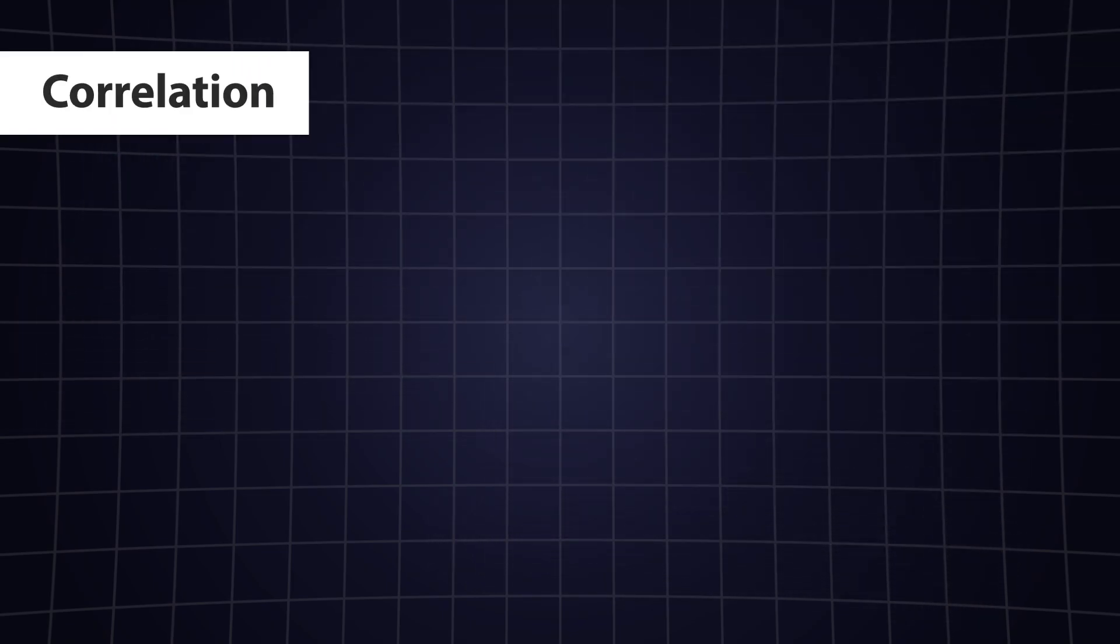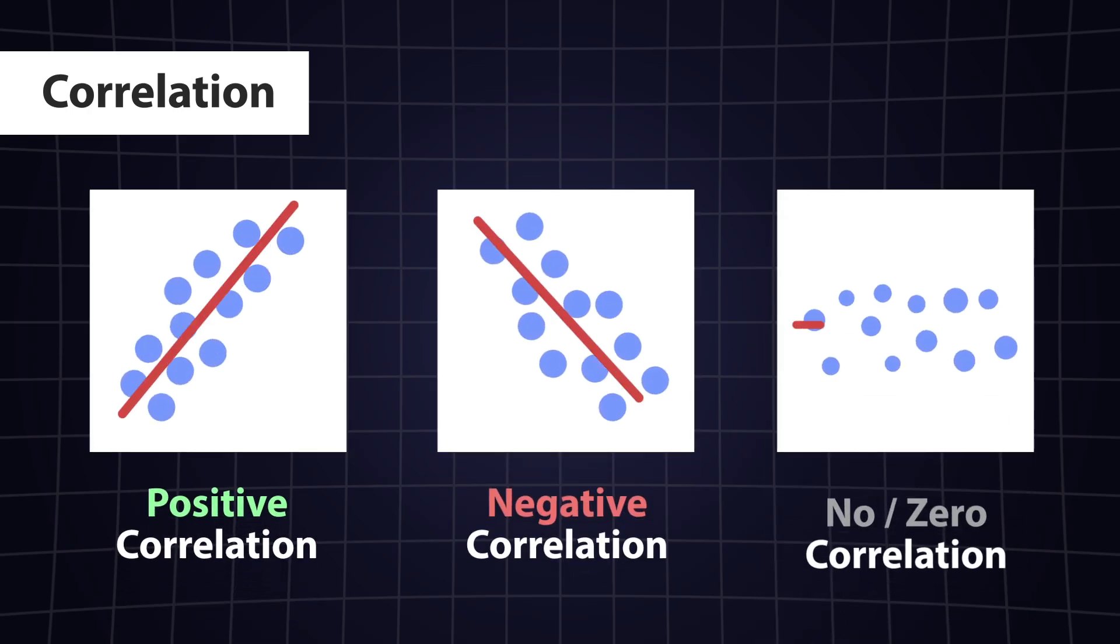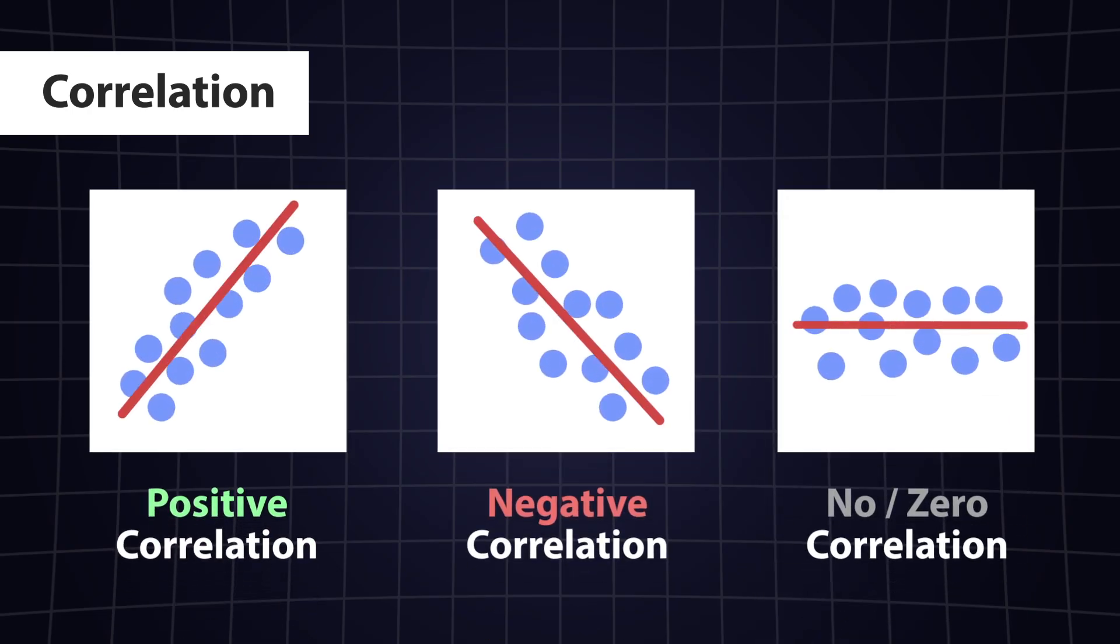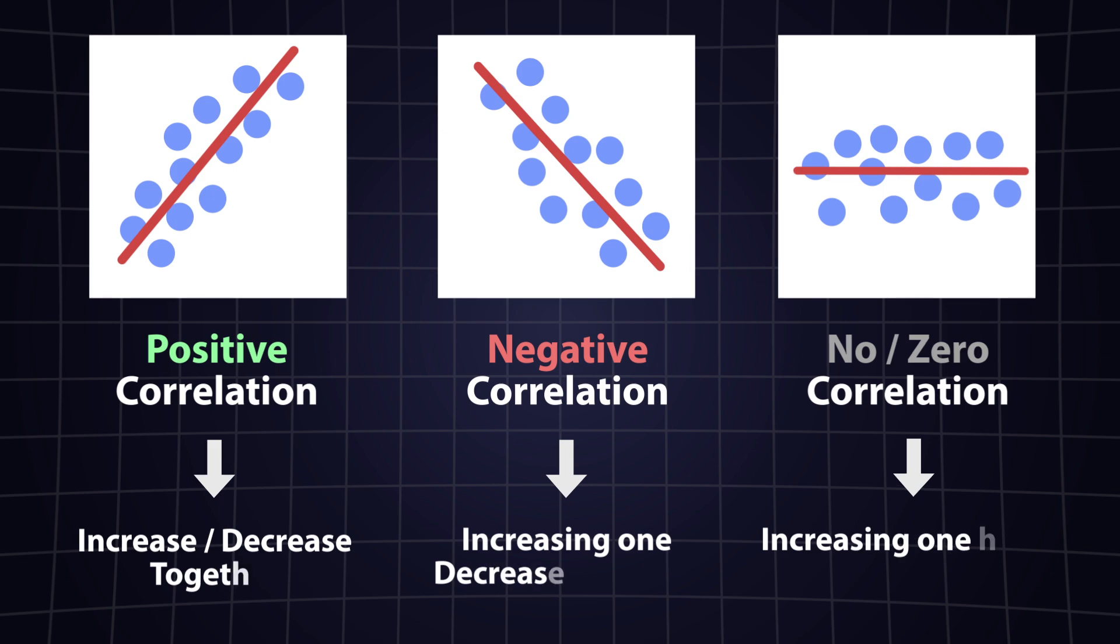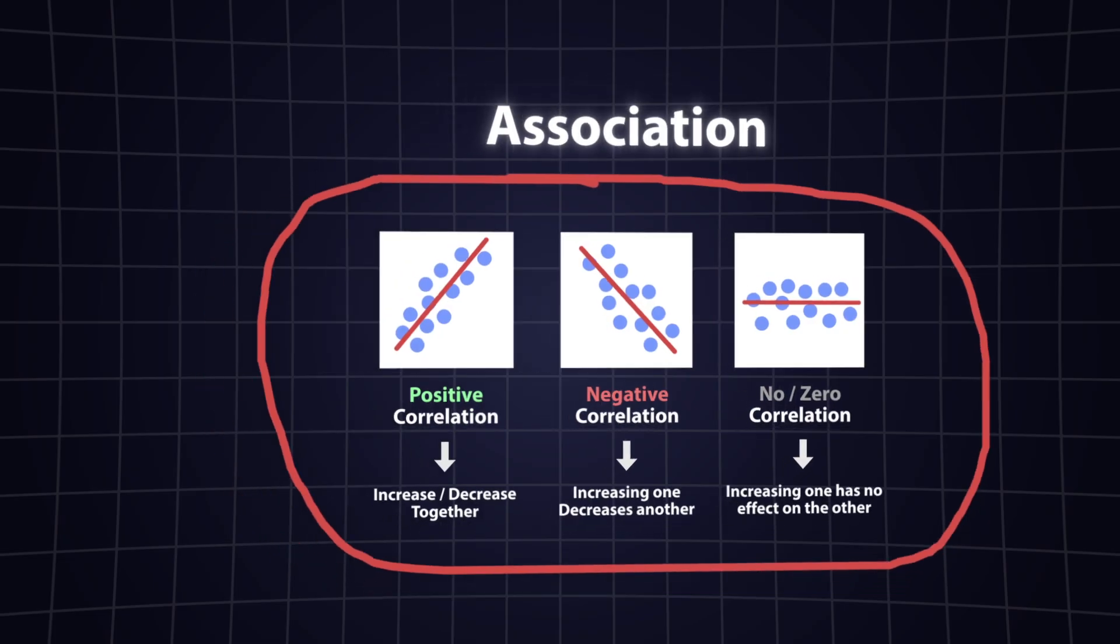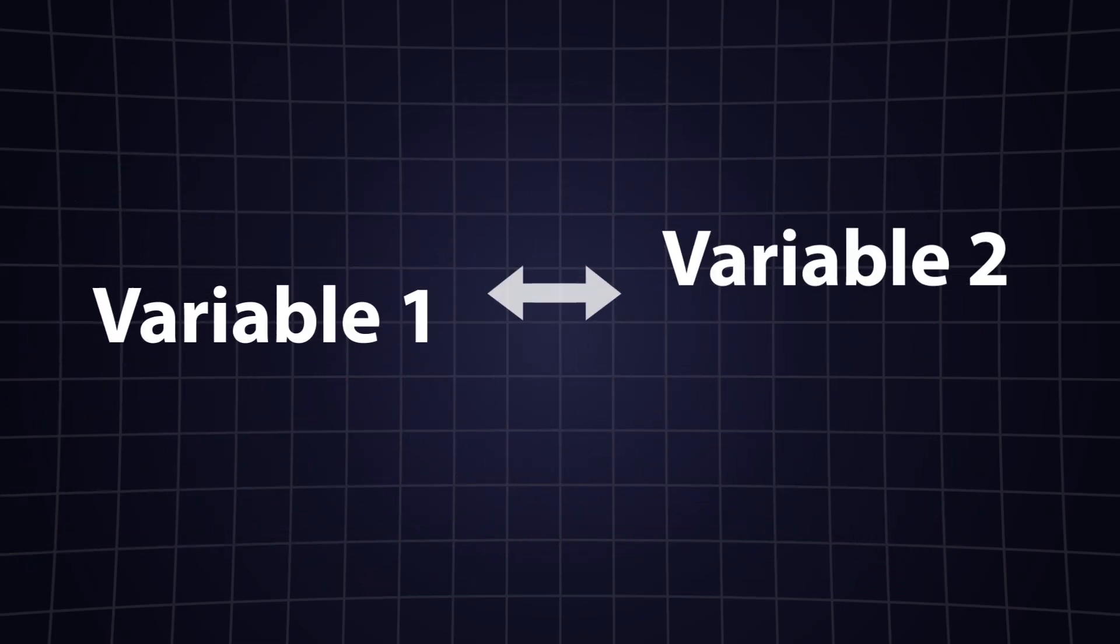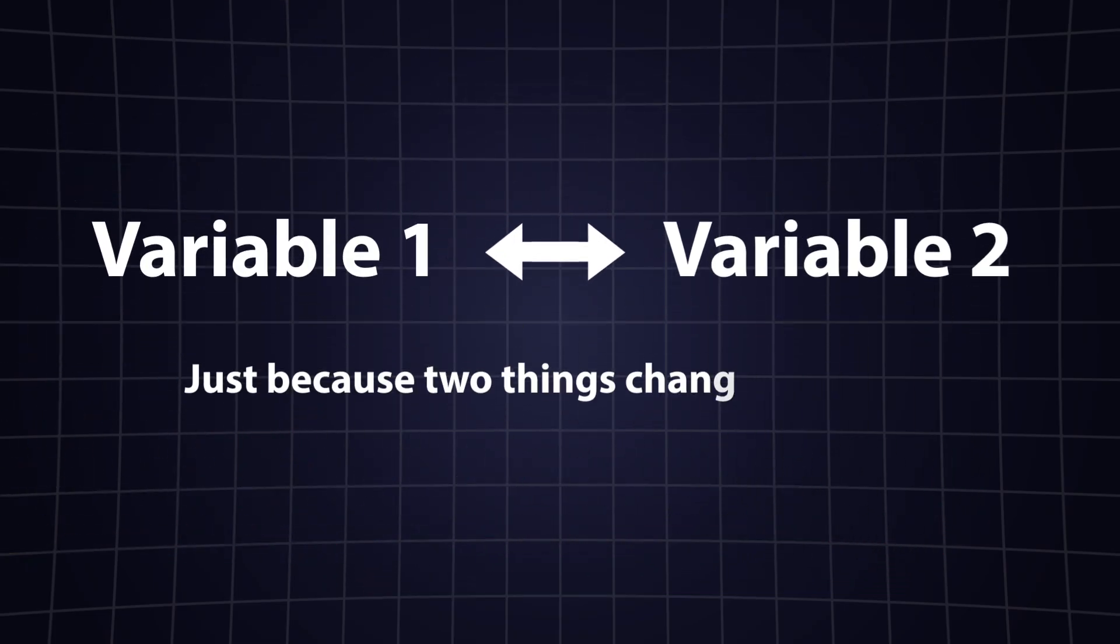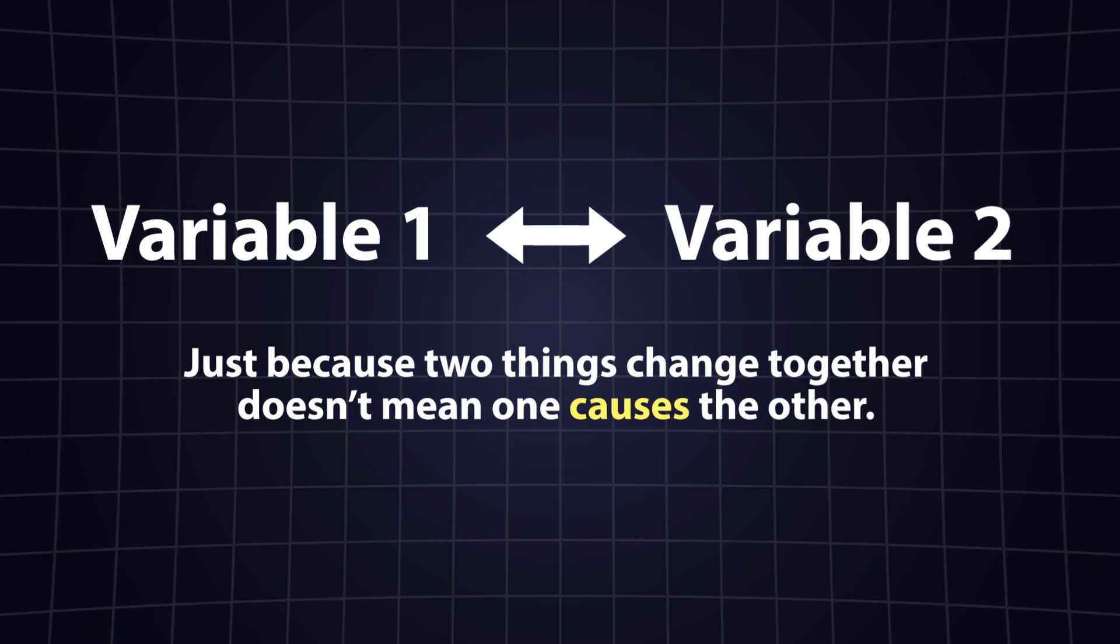Correlation is a statistical term that describes a relationship between two variables. When two variables are correlated, it means they tend to change together. This defines association. It means two variables are somehow connected to each other, but we cannot determine whether one causes the other or whether they cause each other.